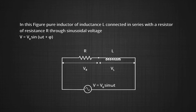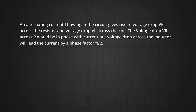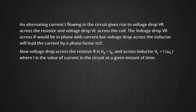In this figure, a pure inductor of inductance L is connected in series with a resistor of resistance R through a sinusoidal voltage source V equal to V₀ sin(ωt + φ). An alternating current flowing in the circuit gives rise to the voltage drop V_R across the resistor and the voltage drop V_L across the coil. The voltage drop V_R across R would be in phase with the current, but the voltage drop across the inductor will lead the current by a phase difference of π/2. The voltage drop across resistor R is V_R = IR and across the inductor V_L = IωL, where I is the value of current in the circuit at a given instant of time.